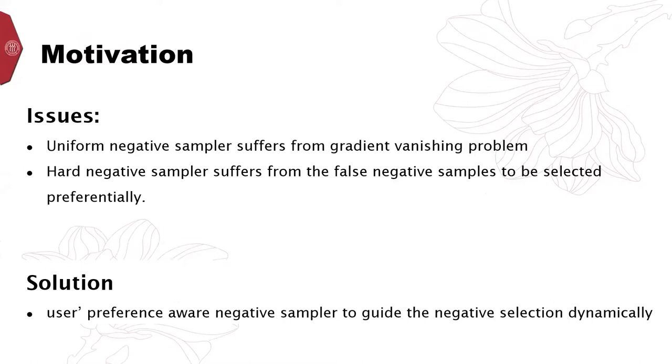Uniform negative sampler suffers from the gradient vanishing problem. Hard negative sampler maintains the hard negative samples with a high gradient for training, causing the false negative samples to be selected preferentially. Those issues may lead to overfitting and further poor generalization of the model.